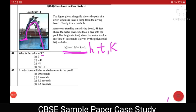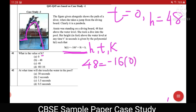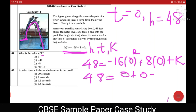Now when the time t is 0, her height above water level is 48. So let us substitute here. 48 is equal to minus 16 into 0 square plus 8 into 0 plus k. So this gives you 48 is equal to 0 plus 0 plus k. Hence c is the right option that is 48.